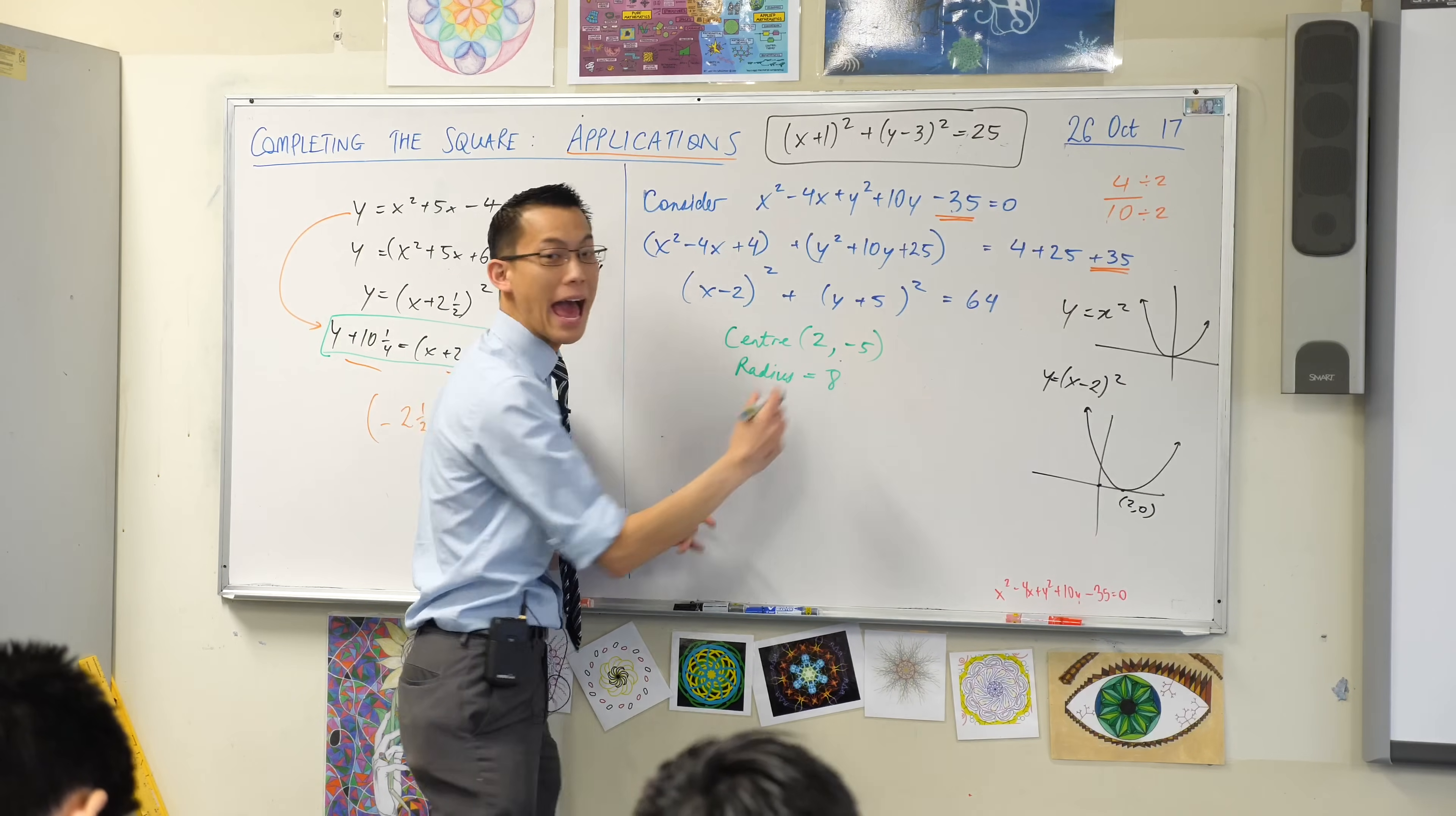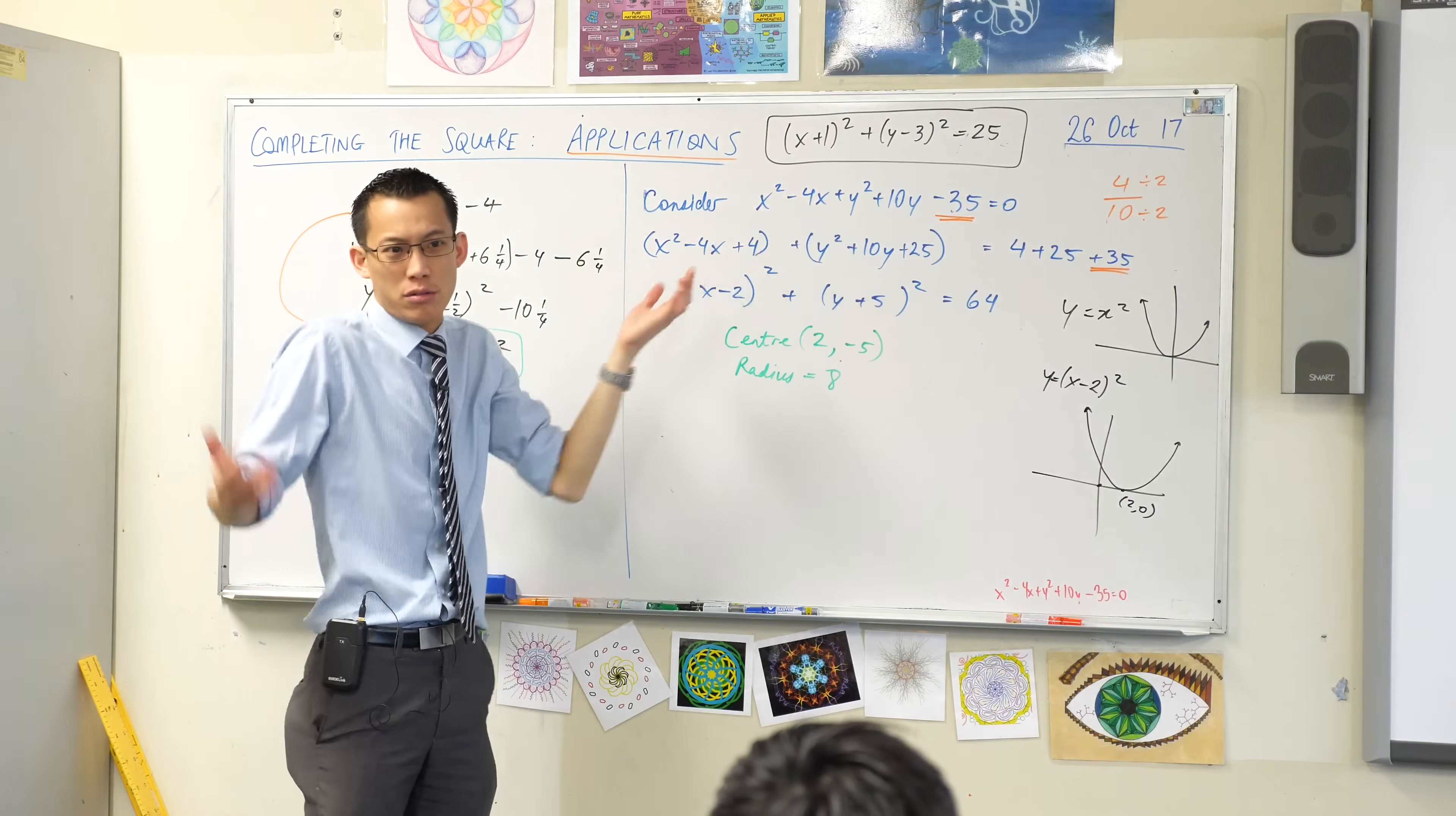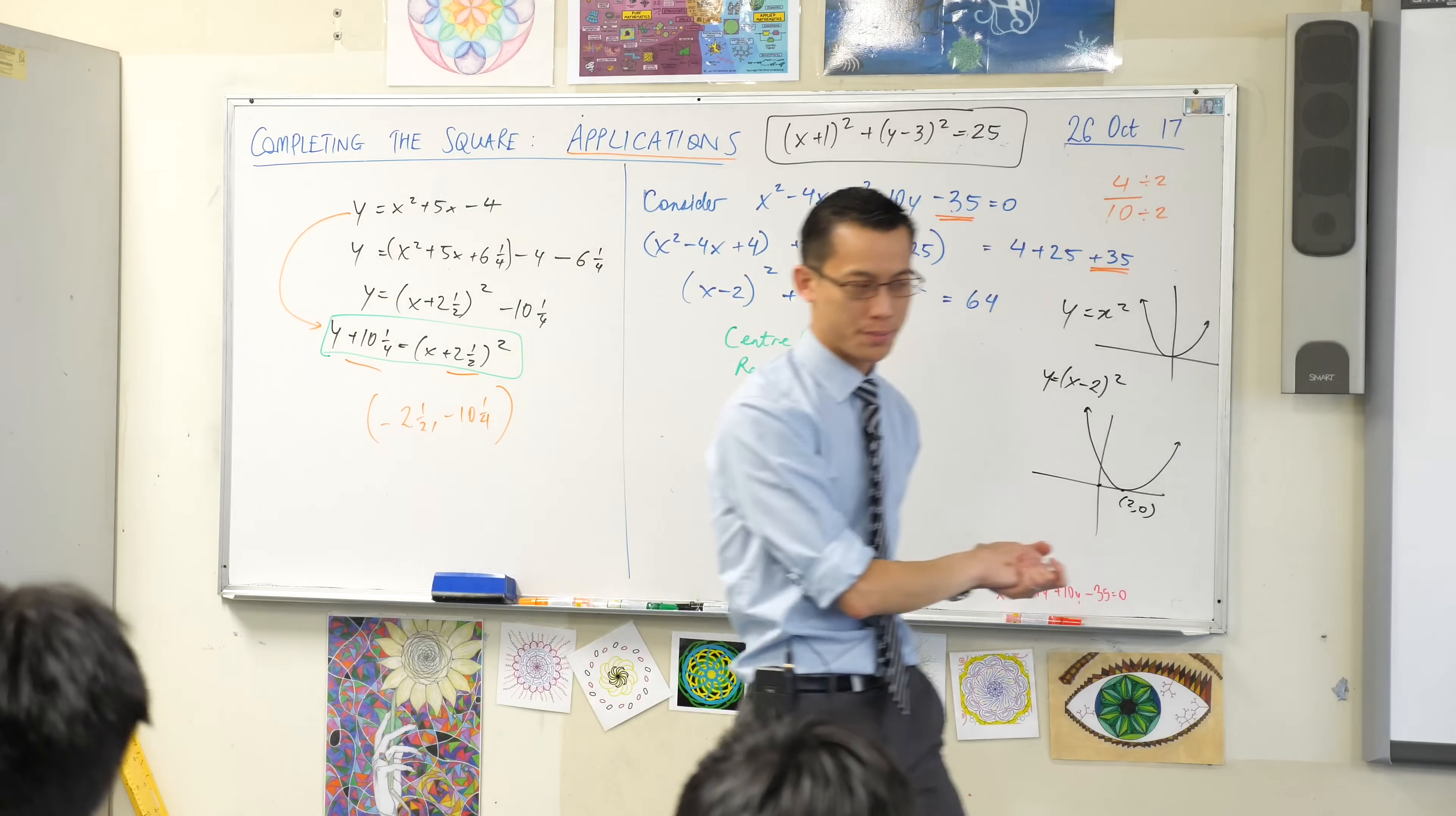So, this is why, conveniently back at the graphing topic, if we ever asked you to graph a circle, we always gave it to you like this. Because if I gave it to you like that, you'd be like, what do I do with that? I don't know all the bits and pieces. But now that we know how to complete the square, you can see it's useful in these other ways. You can apply it to different problems. You can find the vertex. You can find the center.